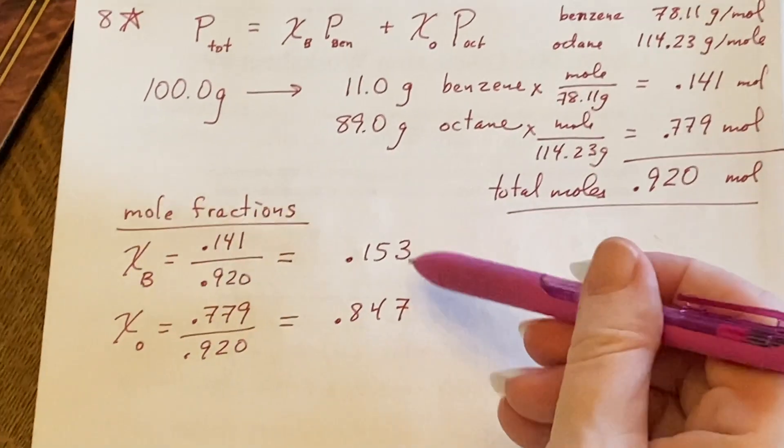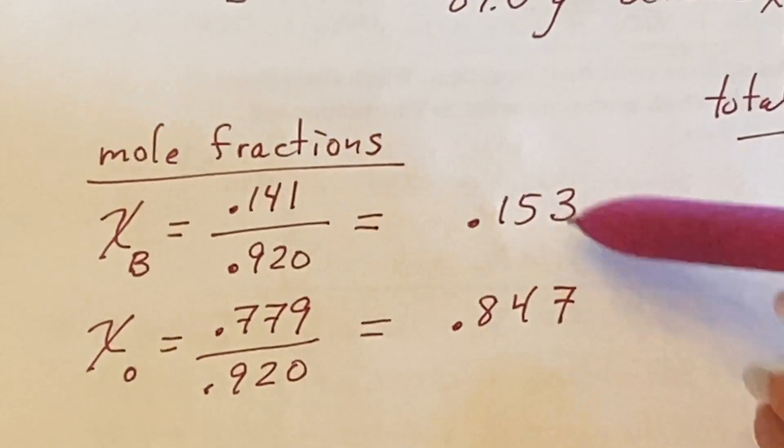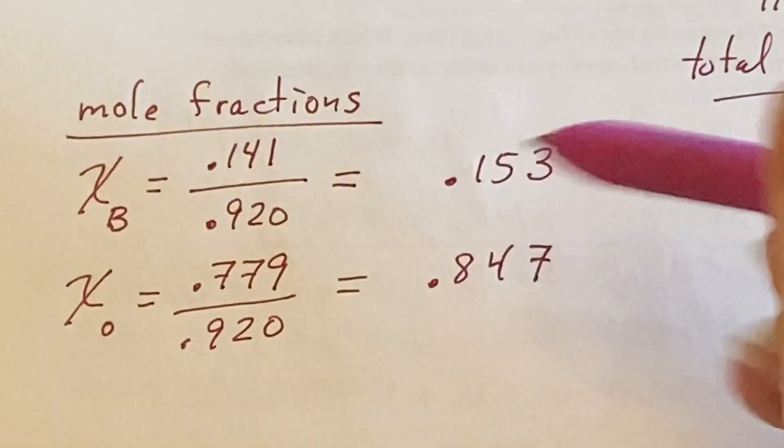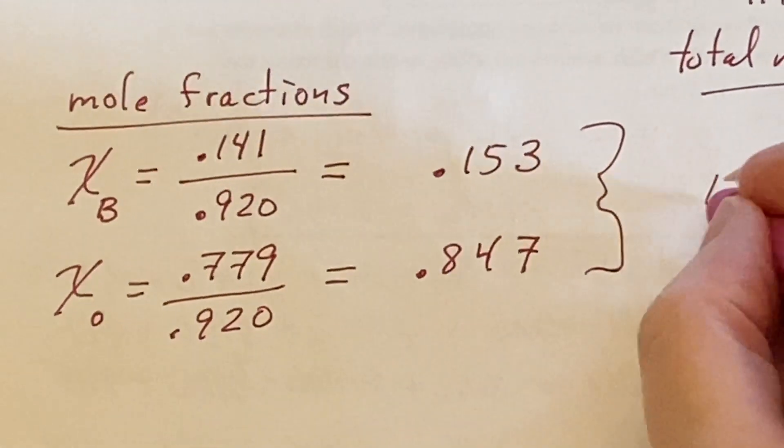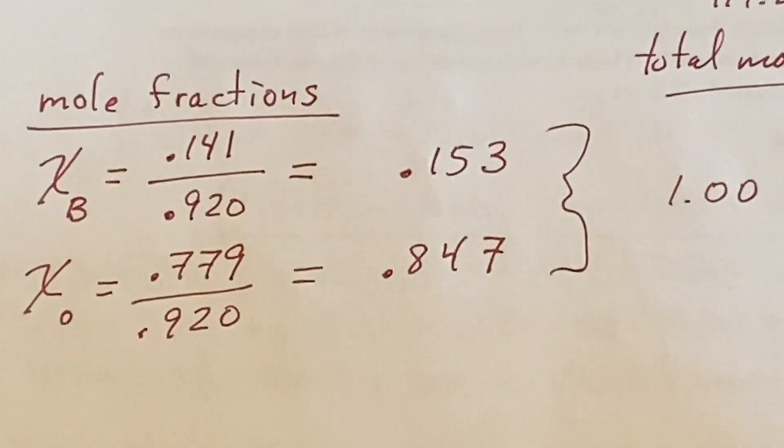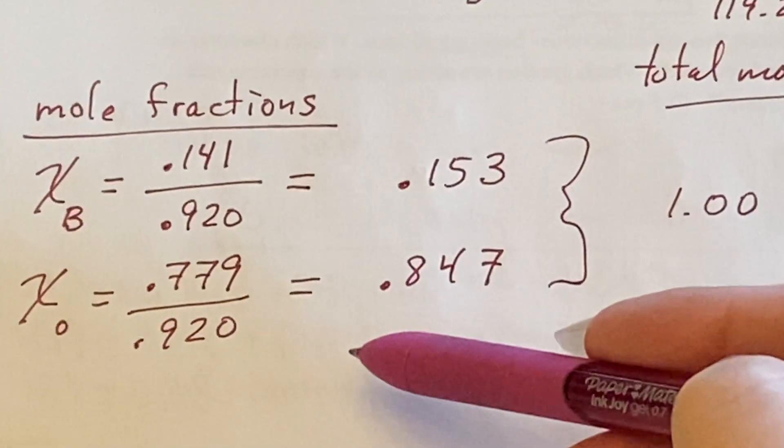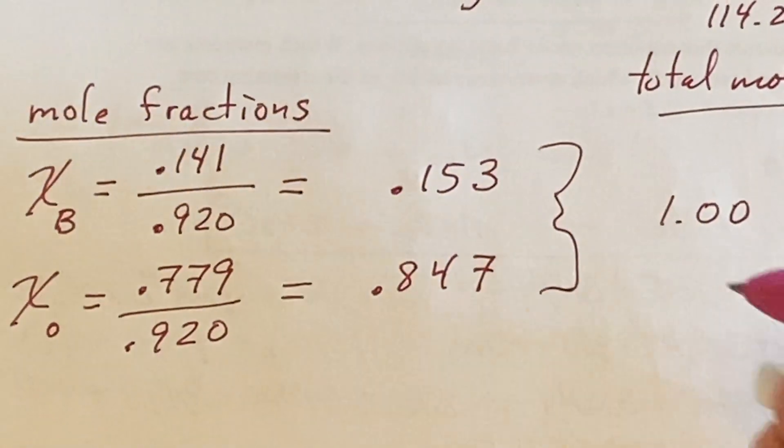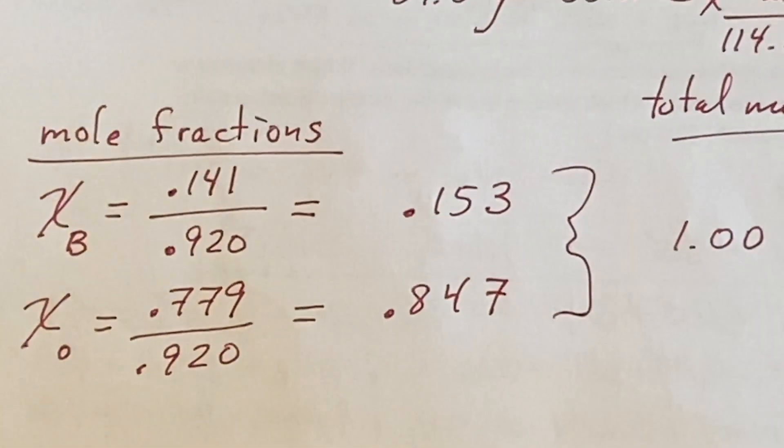Here's a place where you can do a double check. Just quickly you add these together and you discover that they add together to be 1.0. Great. That's what they should add up to because they're supposed to be mole fractions of the entire solution.